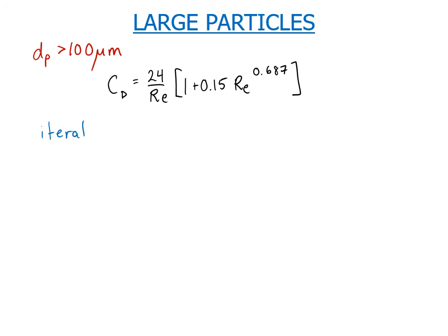Like guess some starting settling velocity, use that to calculate the Reynolds number, and then go ahead and calculate your settling velocity. If they match up, that's great, you're done. If not, start with a new guess, and hopefully you'll get closer.